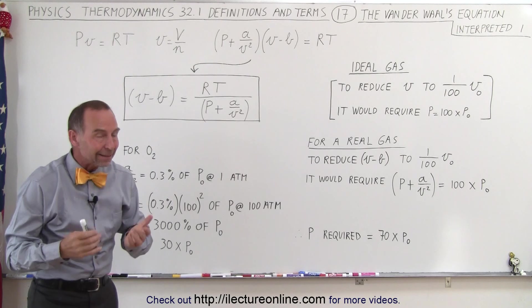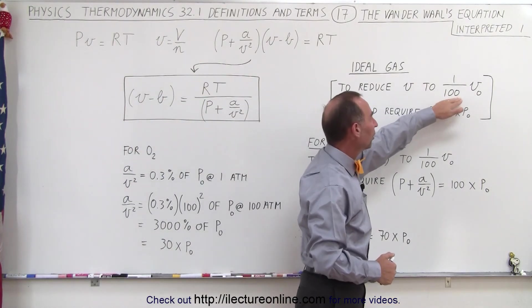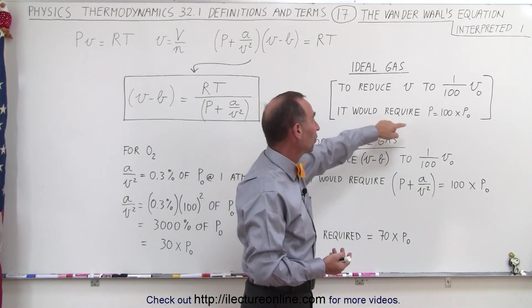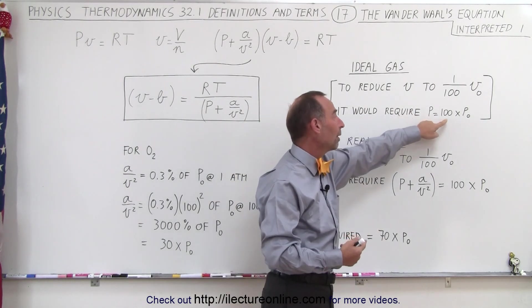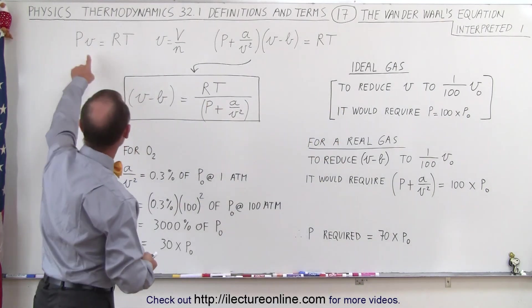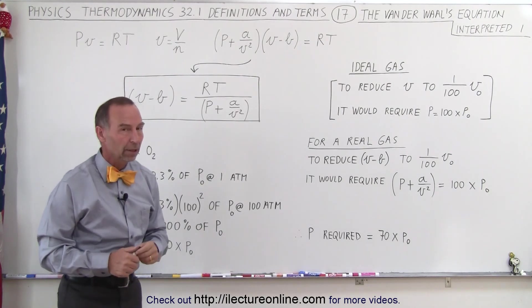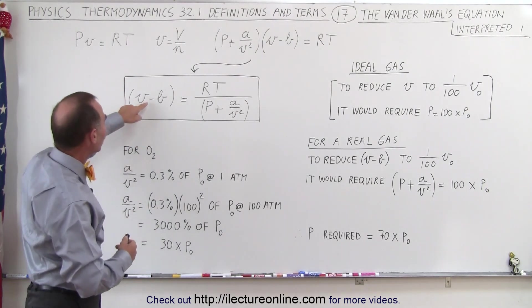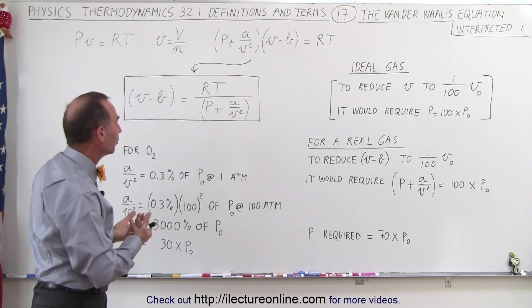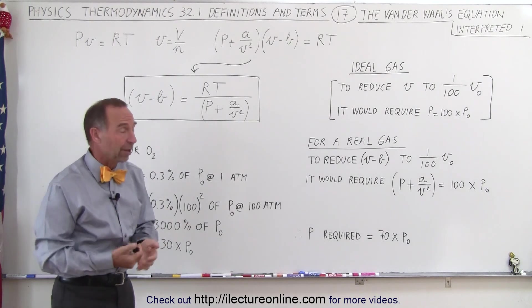Now, in an ideal gas, if we want to reduce the volume to one-hundredth original volume, all we have to do is increase the pressure so that the new pressure is now 100 times as much as the original pressure, because there's this inverse relationship between pressure and volume in the ideal equation. But with the Van der Waals equation, you can see there are some other parameters in there that become quite important as the pressure increases to a large number such as 100 times atmospheric pressure.